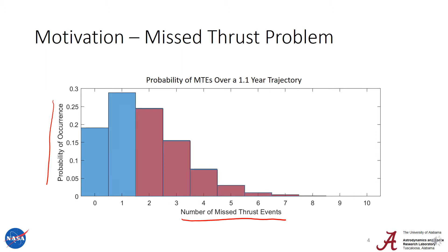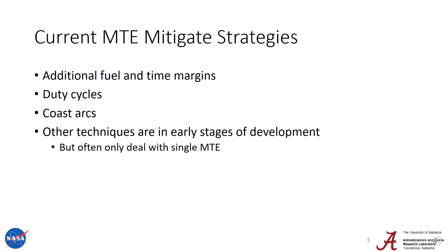What's more is that the cumulative probability of 2 or more missed thrust events is greater than 50%. So the question isn't will there be missed thrust events, but how many missed thrust events will there be and how will we deal with them when they occur? Current missed thrust event mitigation strategies mostly revolve around implementing some non-optimal quantity in the optimization cycle, like requiring the spacecraft to carry additional fuel, providing a time margin, operating the engine at a lower duty cycle, or putting in forced coasting arcs. Other techniques are at early stages of development but often only deal with a single missed thrust event, while multiple missed thrust events are the norm even on short missions.